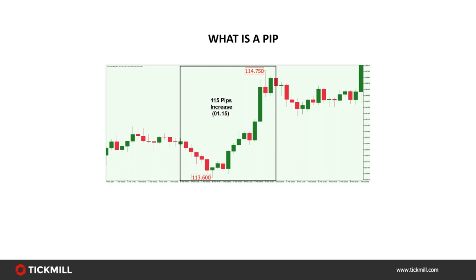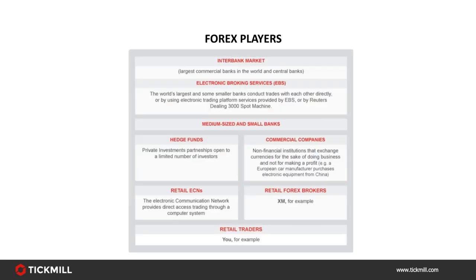What you need to understand is that pip value varies based on the exchange rate of currency pairs — so not all pips are equal. This means that when trading several different currency pairs using the same notional trade size, not all trades will be worth the same amount. For example, £10,000 notional on EUR/USD and £10,000 notional on EUR/GBP from a GBP-denominated account could be worth very different amounts.